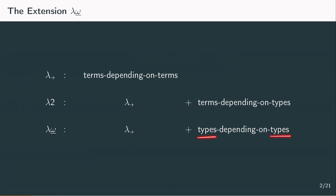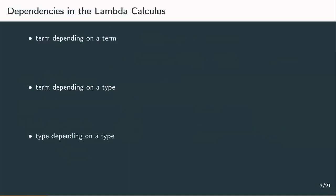So we're going to add type abstraction in types. This system is denoted by a lambda with an underlined Greek omega and it's called lambda weak omega. The attribute weak is used to differentiate it from a closely related system called lambda omega, which we're going to take a look at towards the end of this video. First we want to recap the already known dependencies before we analyze what this new dependency is and how we can abstract something in a type.